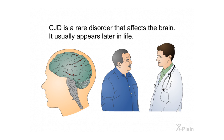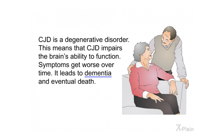CJD is a rare disorder that affects the brain and usually appears later in life. CJD is a degenerative disorder, meaning it impairs the brain's ability to function and symptoms get worse over time. It leads to dementia and eventual death.